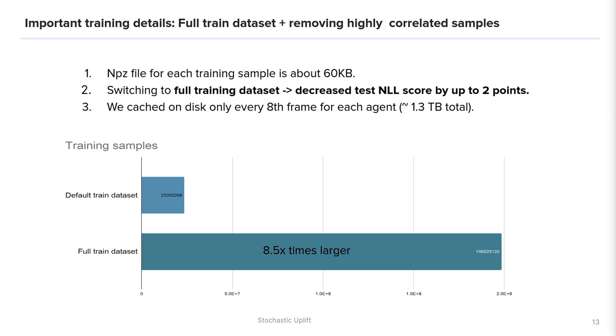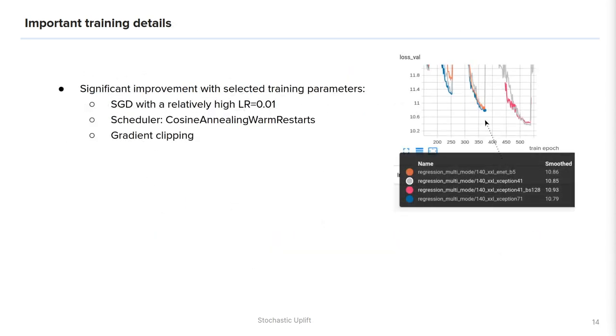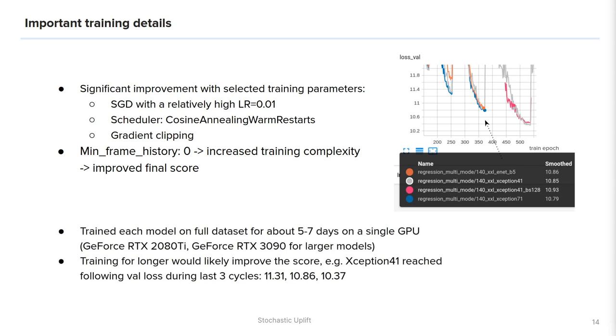Another important step was to start using the full training dataset which contains more than 1000 hours of driving. To remove highly correlated samples we selected only every eighth frame for every agent in the dataset. This reduced the epoch training time and the disk space required for caching the dataset from 10 terabytes to 1.3 terabytes. For the core model it was crucial to find a proper learning rate schedule. We used stochastic gradient descent with relatively high learning rate of 0.01 and a cosine annealing scheduler with warm restarts, where the length of every next cycle was gradually increased. Another important trick was gradient clipping, which stabilized training especially at the initial epoch. Significant score improvement was achieved after we allowed training samples to be without history at all. This increased training complexity and improved the model generalization on validation and test sets. We trained each model for around a week on a single GPU.